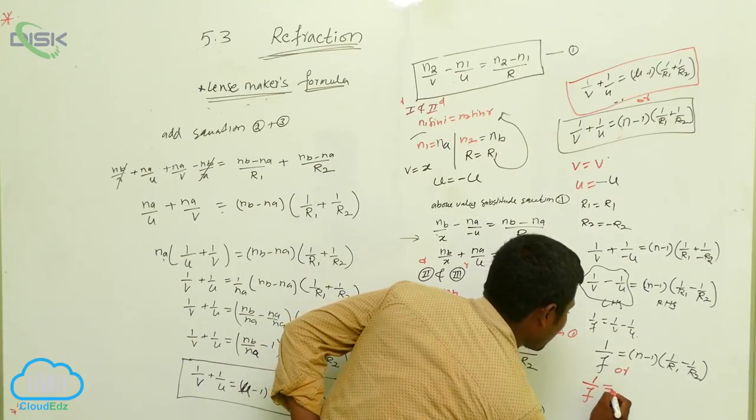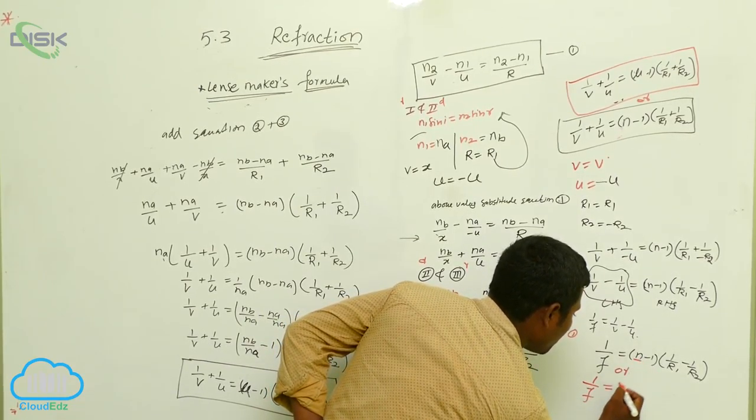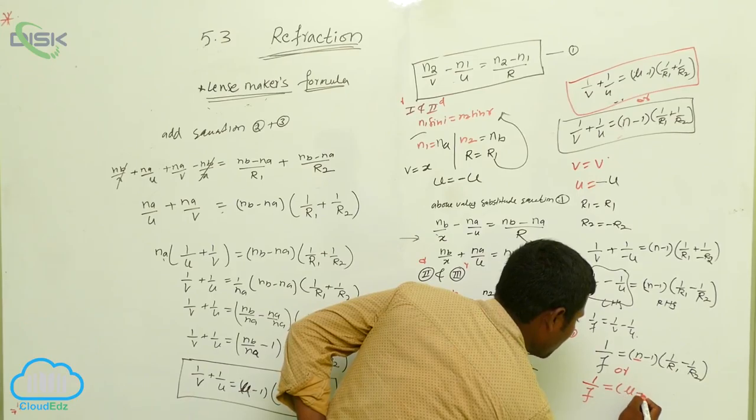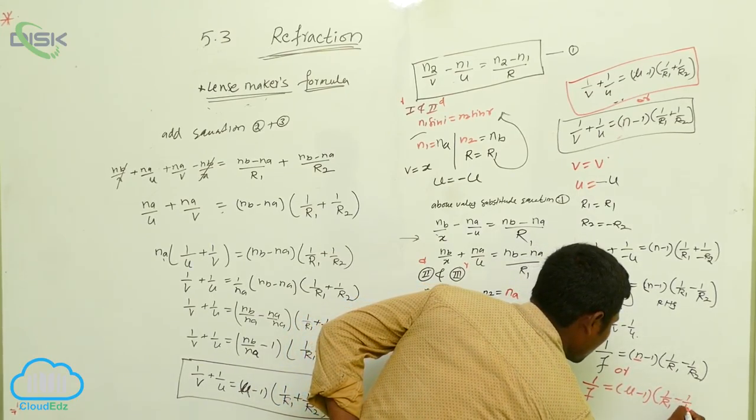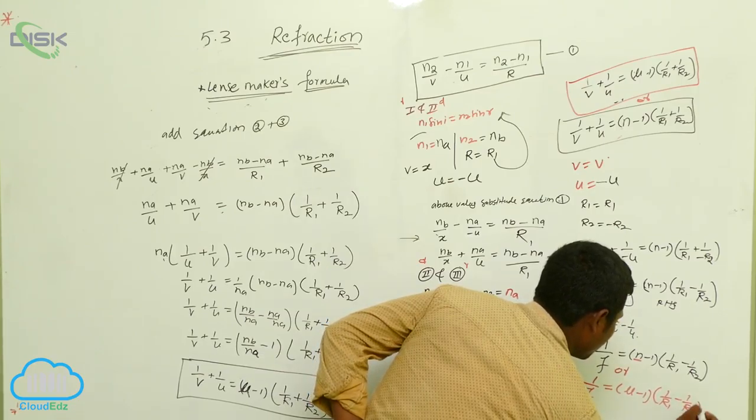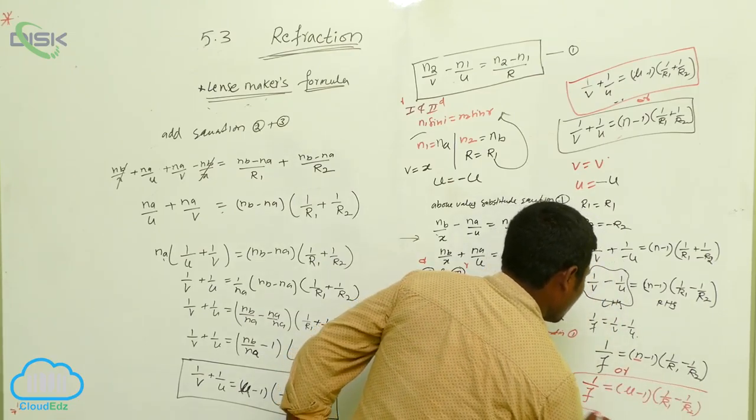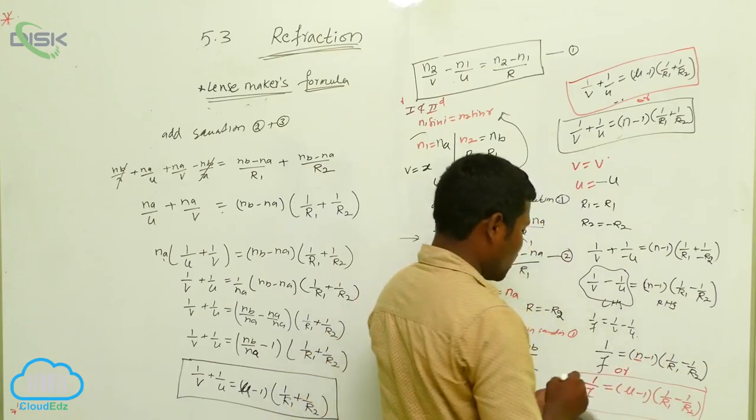The same formula we can express like this also. Instead of taking here n, you can write mu minus 1, 1 by r1 minus 1 by r2. So these two, either you can use this one or this one.